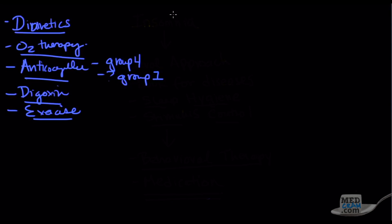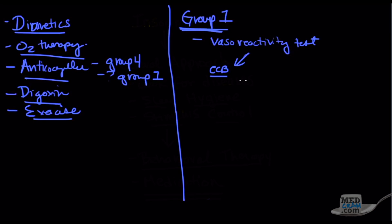Let's talk about group one now and the different classes. Before we start with the advanced medications, we have to do something called a vasoreactivity test. The reason we do this is because those who respond to the vasoreactivity test are more likely to respond to ordinary medications like calcium channel blockers, like the dihydropyridines and diltiazem. If they respond, that's a positive response, give calcium channel blockers. If it's negative, then we go on down to the more advanced medications.